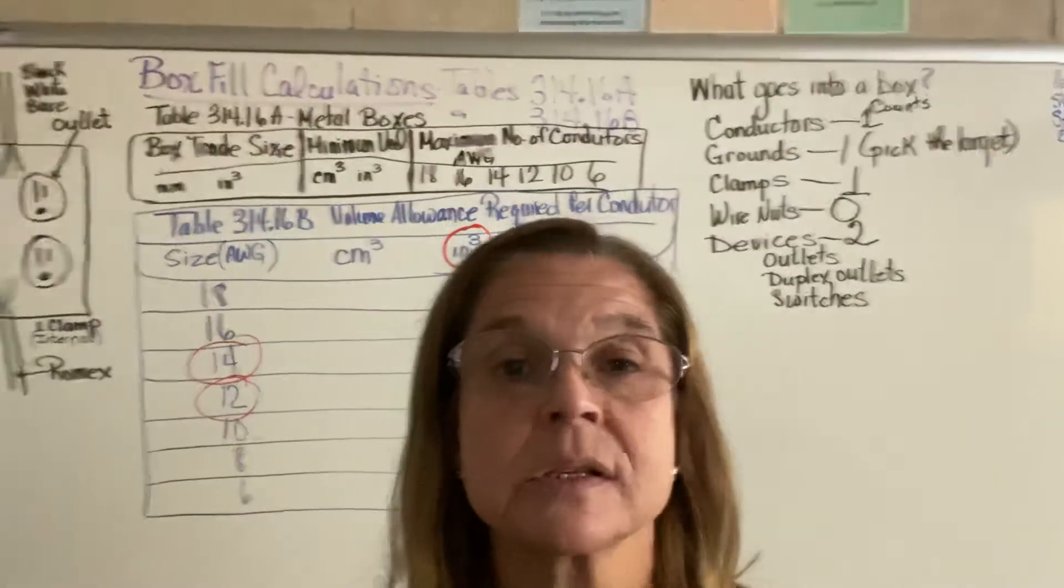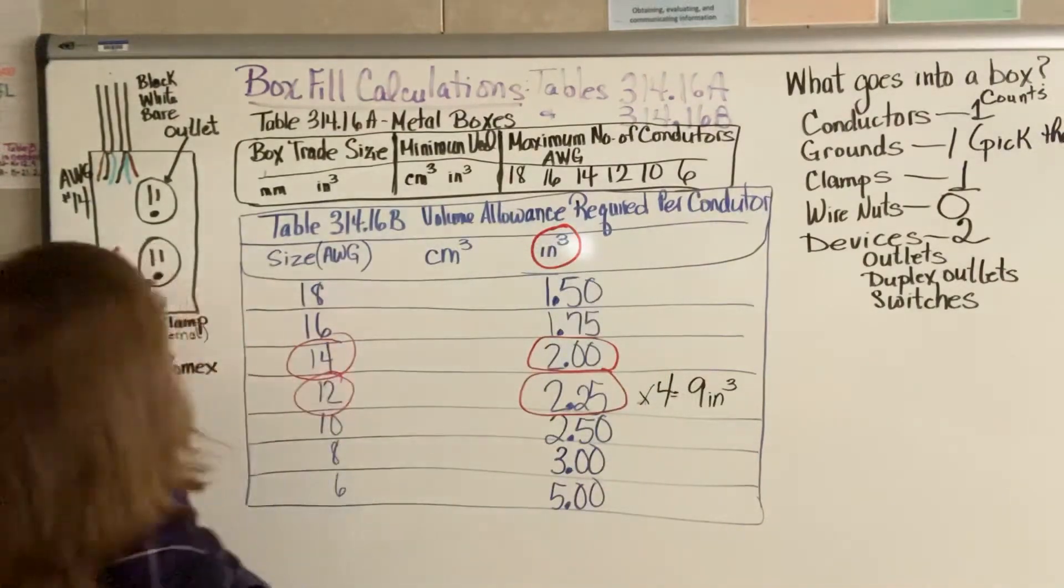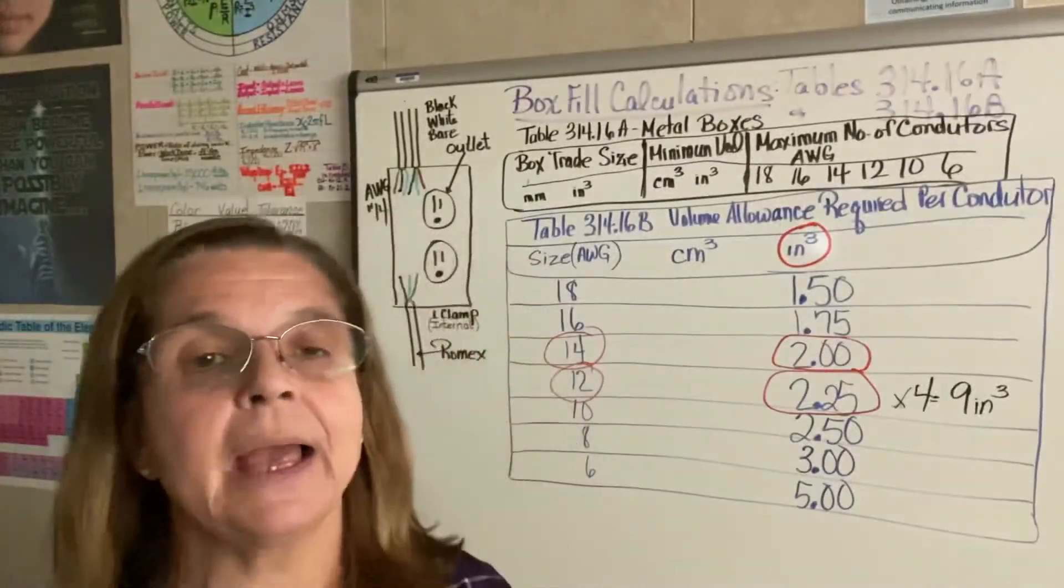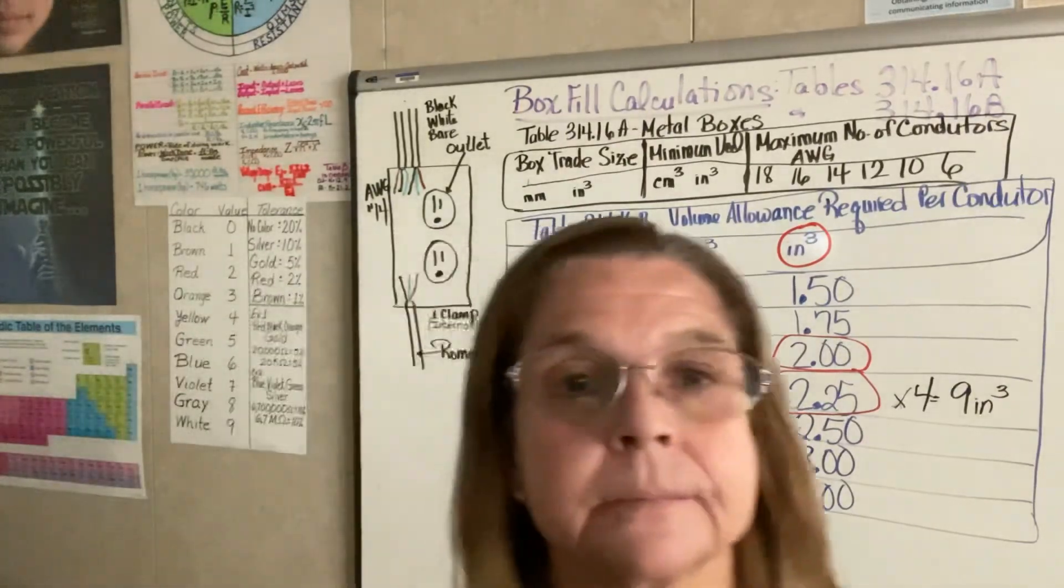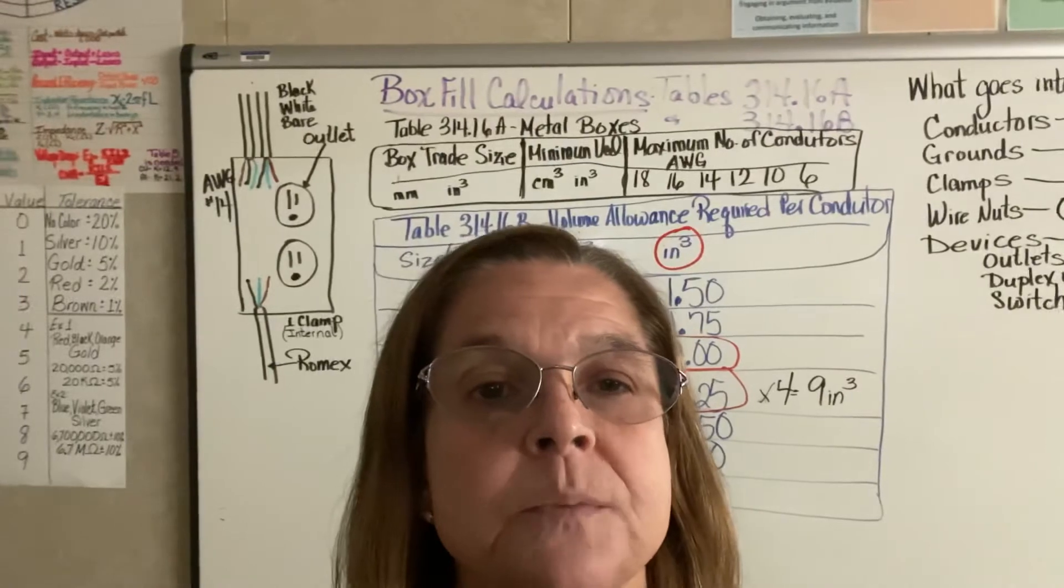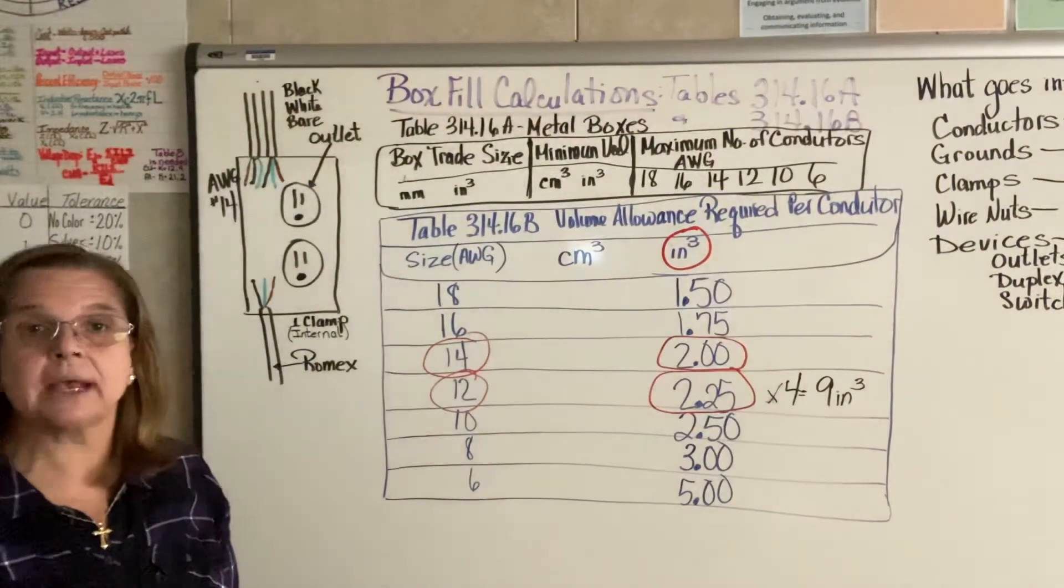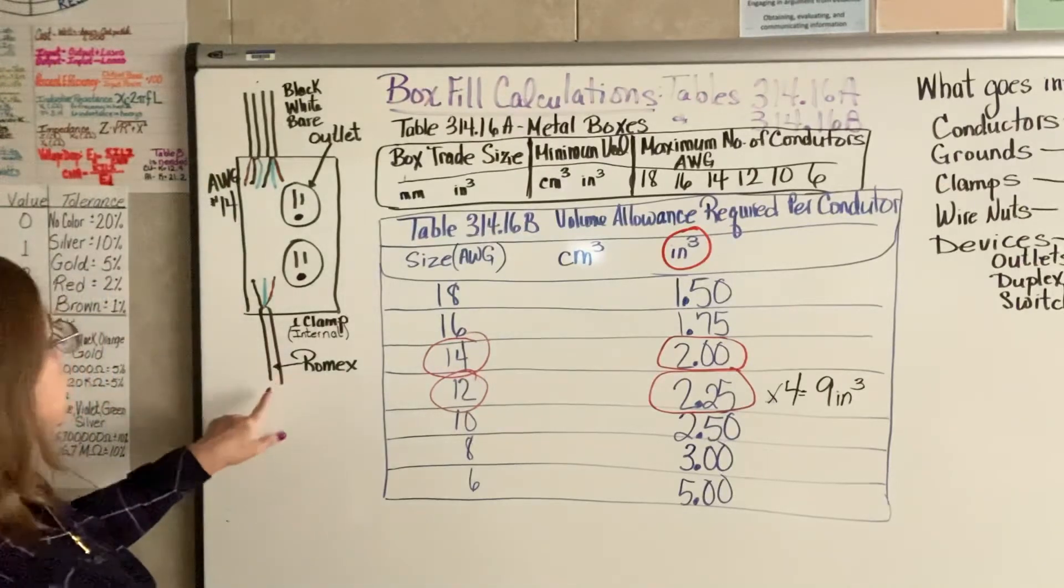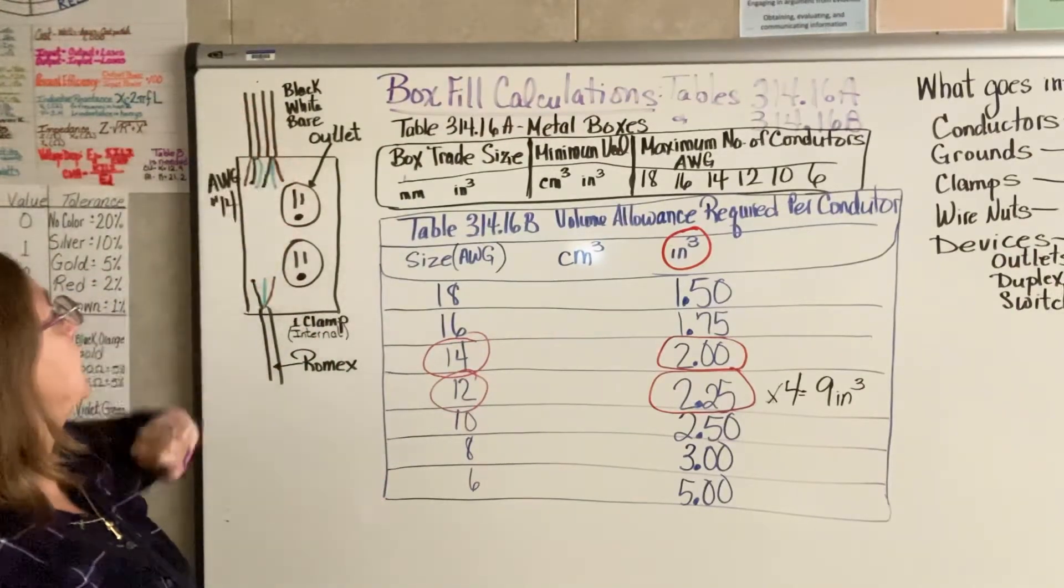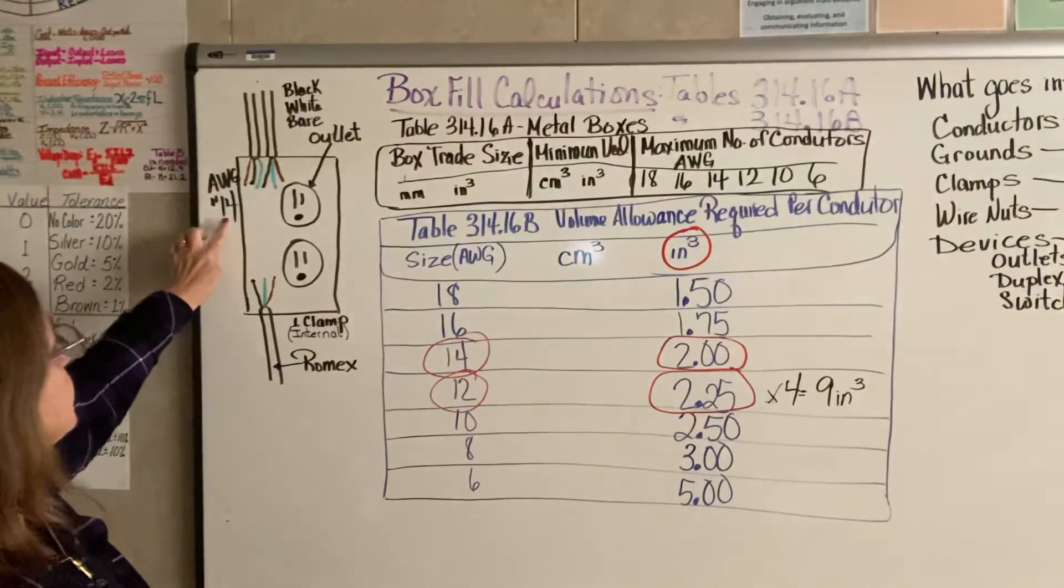So now, over here on the other side, I have an example for us to work through. I have a picture of an outlet here. This particular outlet has an outlet put inside. So in this box, we're going to put an outlet. You can see there's a Romex coming in from the bottom, two going out on the top. And for residential, 14 is a very common wire size. So I've chosen to use size 14. I do have an internal clamp, a couple of wire nuts in there.